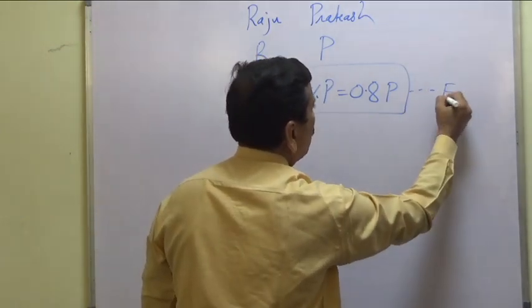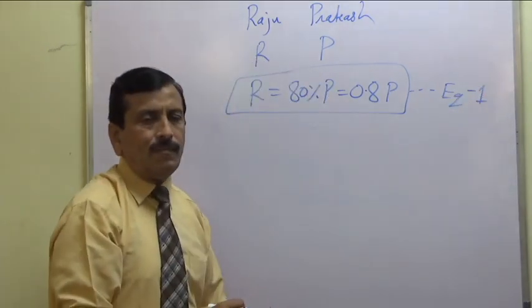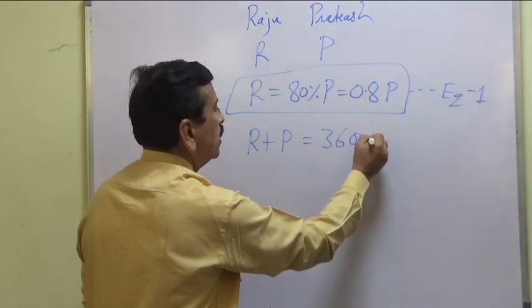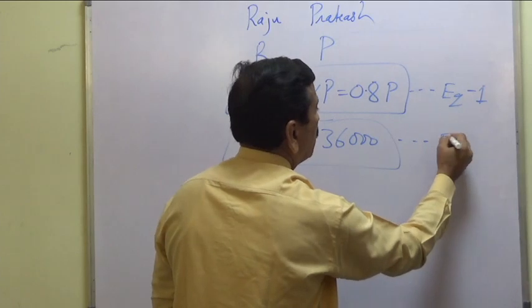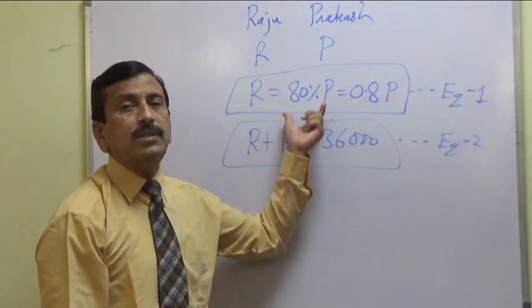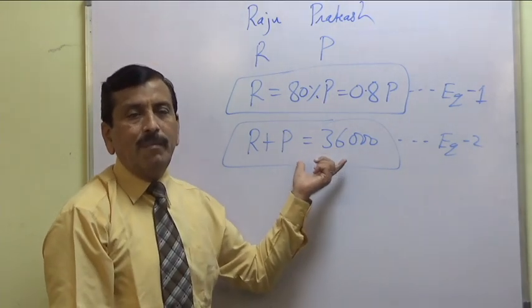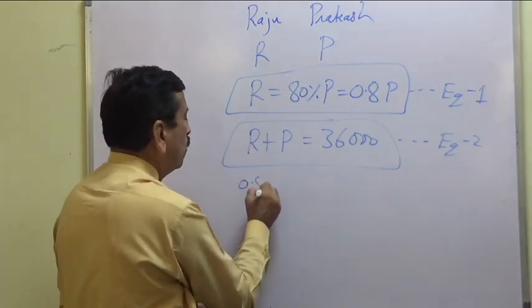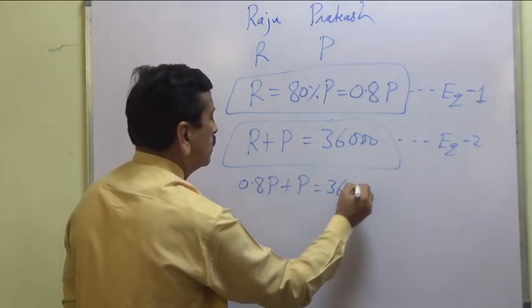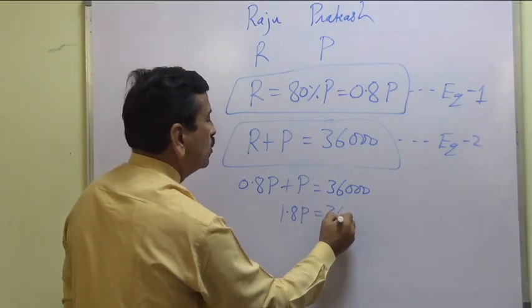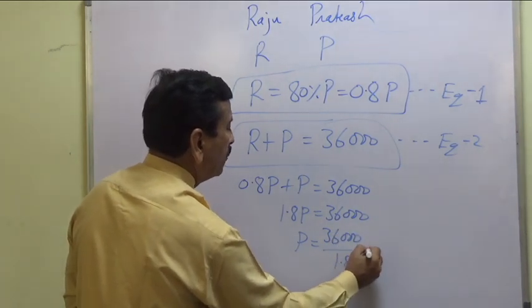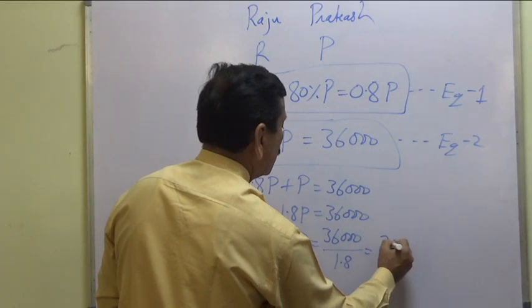Further, salary of Raju plus salary of Prakash equals 36,000 per month. This becomes equation 2. These are two simultaneous equations. Substituting R equals 0.8P into equation 2: 0.8P plus P equals 36,000, so 1.8P equals 36,000, and therefore P equals 36,000 divided by 1.8, which gives 20,000.